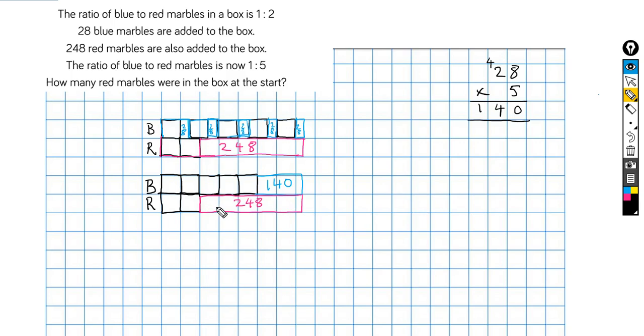Because now I can see that the difference between 248 and 140, because 248 goes over to here, that the difference between them must be equal to these three blocks. So 248 subtract 140, it gives me 108, so this is 108.